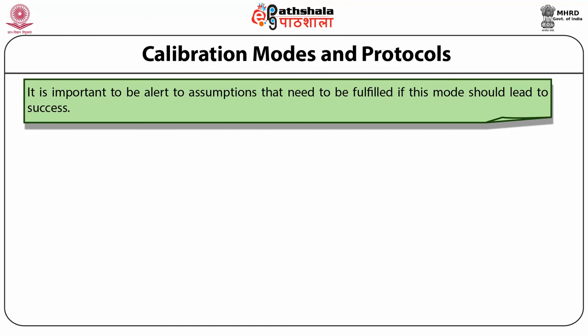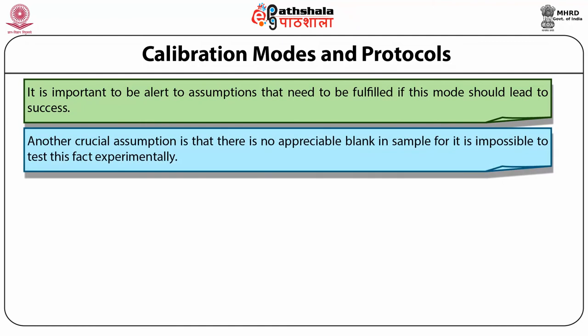It is equally important to be alert to the assumptions that need to be fulfilled for this mode to succeed. One of them is that the curve has to be strictly linear even in the lower range, where due to the presence of the analyte in the sample one cannot produce data points but must extrapolate to zero. Another crucial assumption, particularly in trace analysis, is that there is no appreciable blank in the sample, as it is impossible to test this fact experimentally.